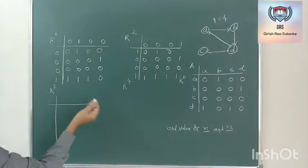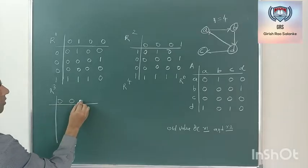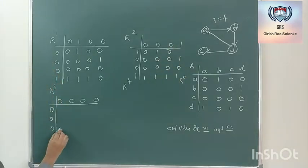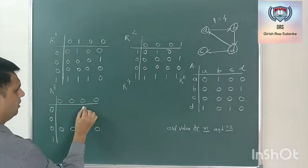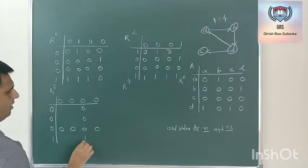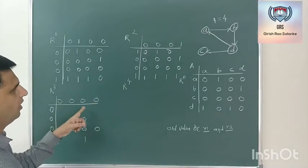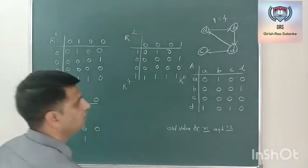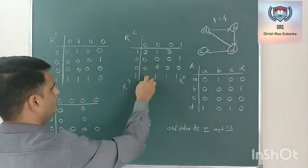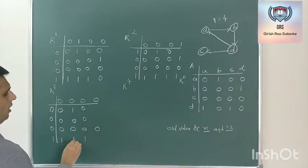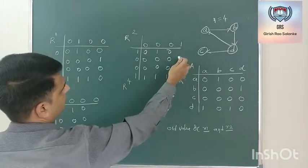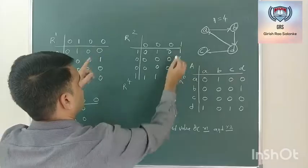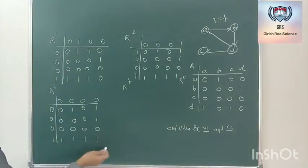Now go for the third iteration. The reference will be third row and third column. Third column is 0, 0, 0, 1 and third row is 0, 0, 0, 1. All columns of the third row reference are 0, so directly take all values from the previous iteration. The only updated value: 1 AND 1 = 1, 1 AND 1 is 1, and the previous iteration value was 0 — this will become 1. Done with the third iteration.